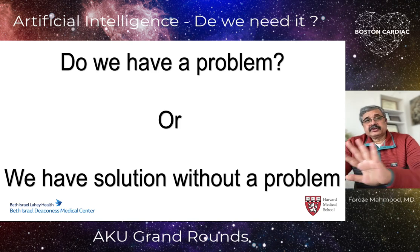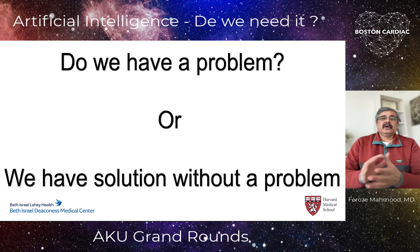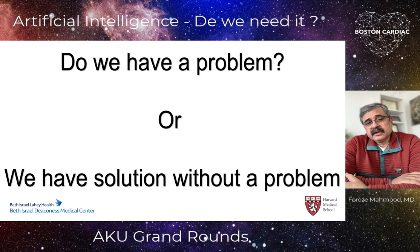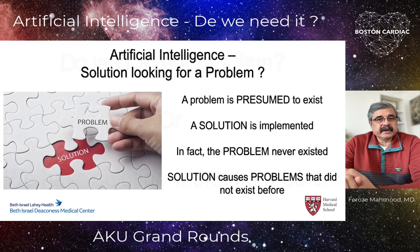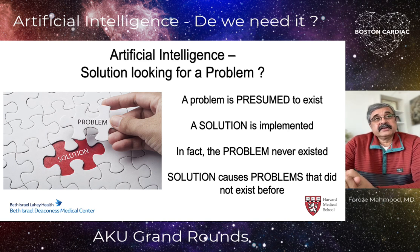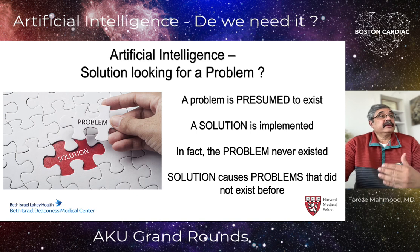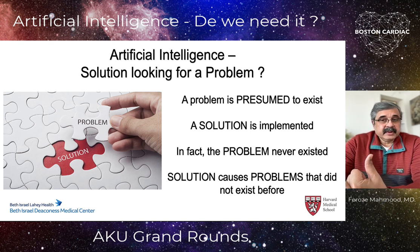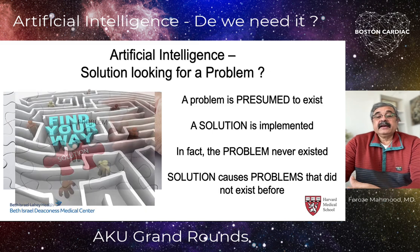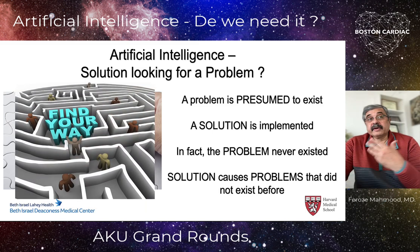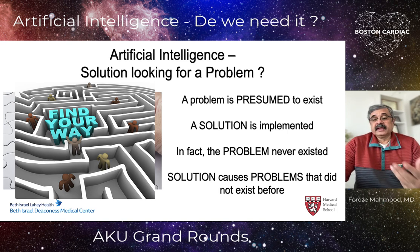After going through the history and development of AI, the question is: do we really have a problem that AI solves, or do we have a solution for which we don't really have a problem? This is a very important and complicated question. A problem is presumed to exist, a solution is implemented, but in fact the problem never existed in the first place — and the solution causes problems that did not exist before. You create a solution to solve a problem that creates more problems that never existed.